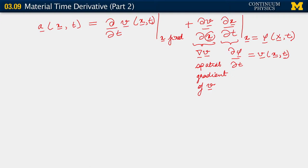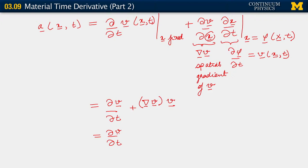Pulling this all together, and now I'm going to dispense with the explicit mention of the arguments little x and t, just to keep this clean. So we have the partial time derivative of phi plus the spatial gradient of phi acting on the velocity v. Everything on the right-hand side is parametrized with respect to little x and t, so let me actually write them explicitly so we can relate the arguments to what we have on the left-hand side.